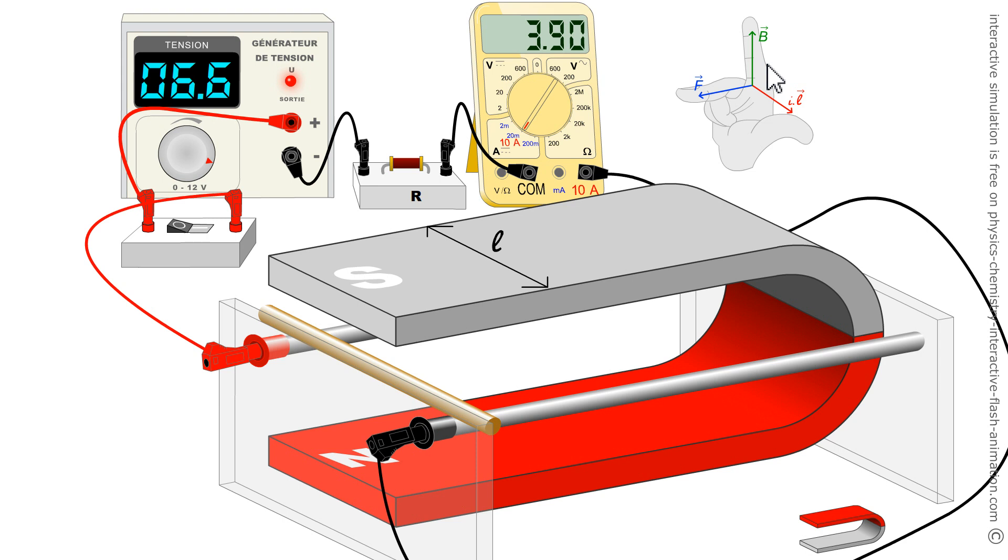This trihedron can rotate. If the I is on the index finger, the B is on the middle finger, and the thumb will show force.